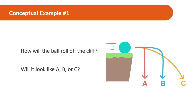How it rolls off depends on how fast it's going, but let's think about the general direction. Is it going to be like A, where it falls mostly flat? Or B, where it goes and then mostly falls flat? Or C, where it goes out like that? The answer is option C.